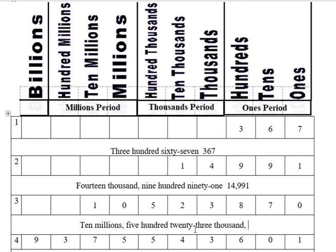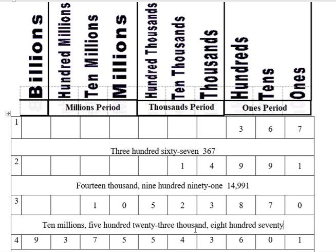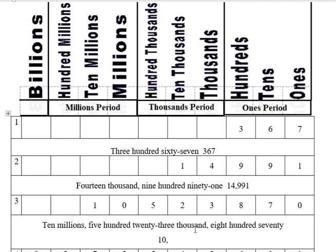And finally the ones period, which is eight hundred seventy. I don't say 'ones' at the end because we assume that's the ones period. Written correctly: ten million, comma, five hundred twenty-three thousand, eight hundred seventy. We wouldn't put spaces in the middle of a number — that's ten million five hundred twenty-three thousand eight hundred seventy.